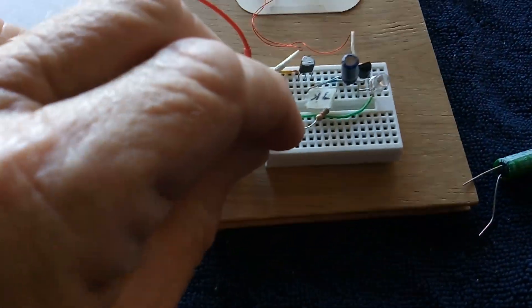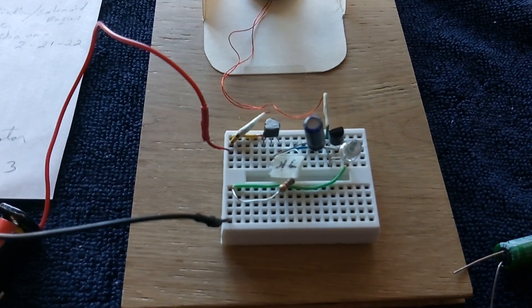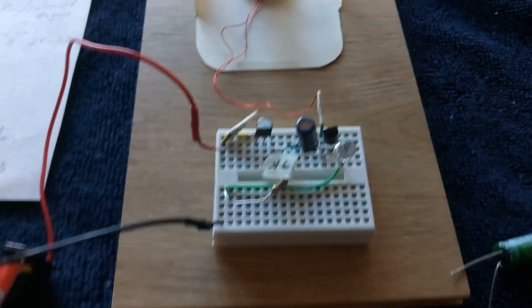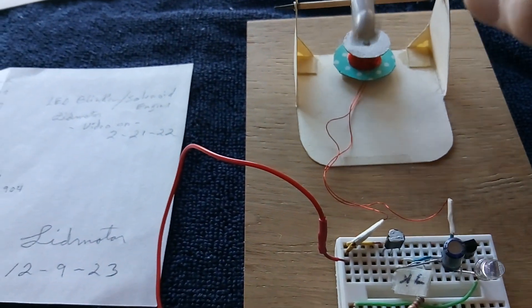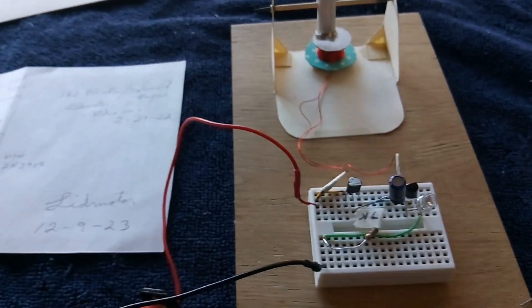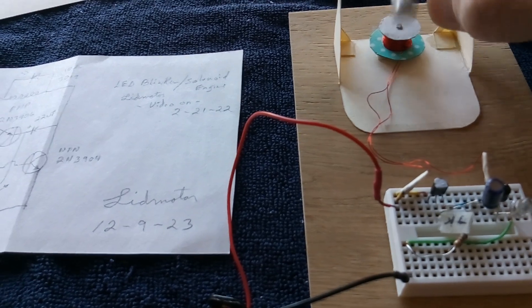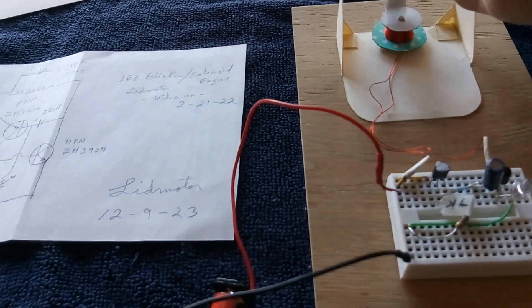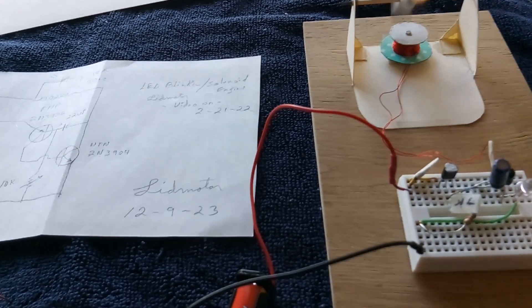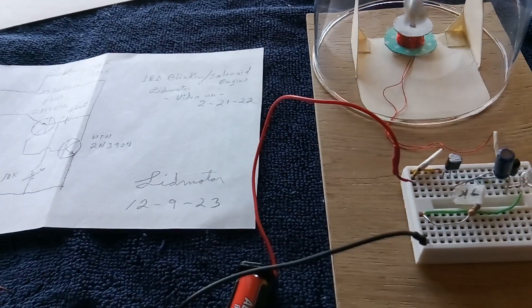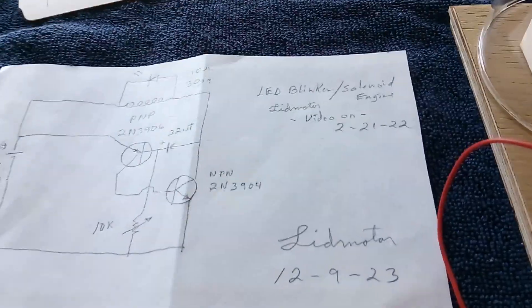There's the blinking going on. Let me get the motor to go here. There goes the motor. Put this back on it here. And like I say, it's a blinker circuit, it's an LED blinker circuit.